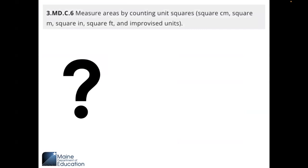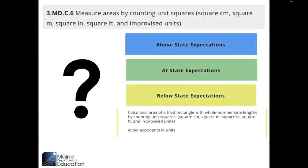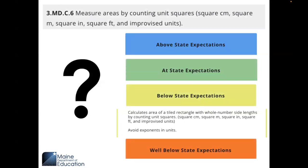Unlike questions from the diagnostic portion of the assessment, every summative question is aligned to a specific Common Core State Standard and to an achievement level. Maine's achievement levels are: above state expectations, at state expectations, below state expectations, and well below state expectations. When applied to standards, achievement levels specify the depth of knowledge and skill that a student demonstrates in relation to that standard. The pattern of a student's responses to the summative questions determines their overall scaled score and achievement level in that content area.